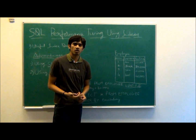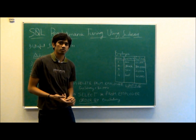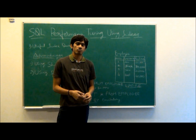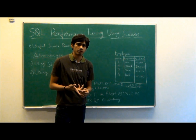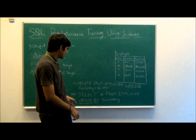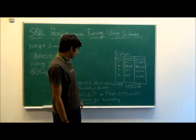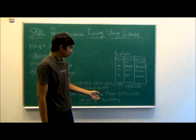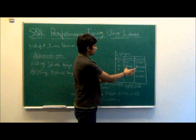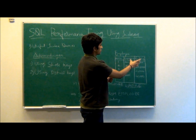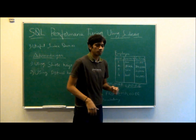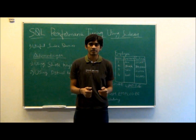Index entries are always stored in a sorted order, so it also helps when you are processing the ORDER BY clause. For example, consider the query: SELECT * FROM employee ORDER BY employee salary. By considering the employee salary column, the employee table will be sorted in increasing order.